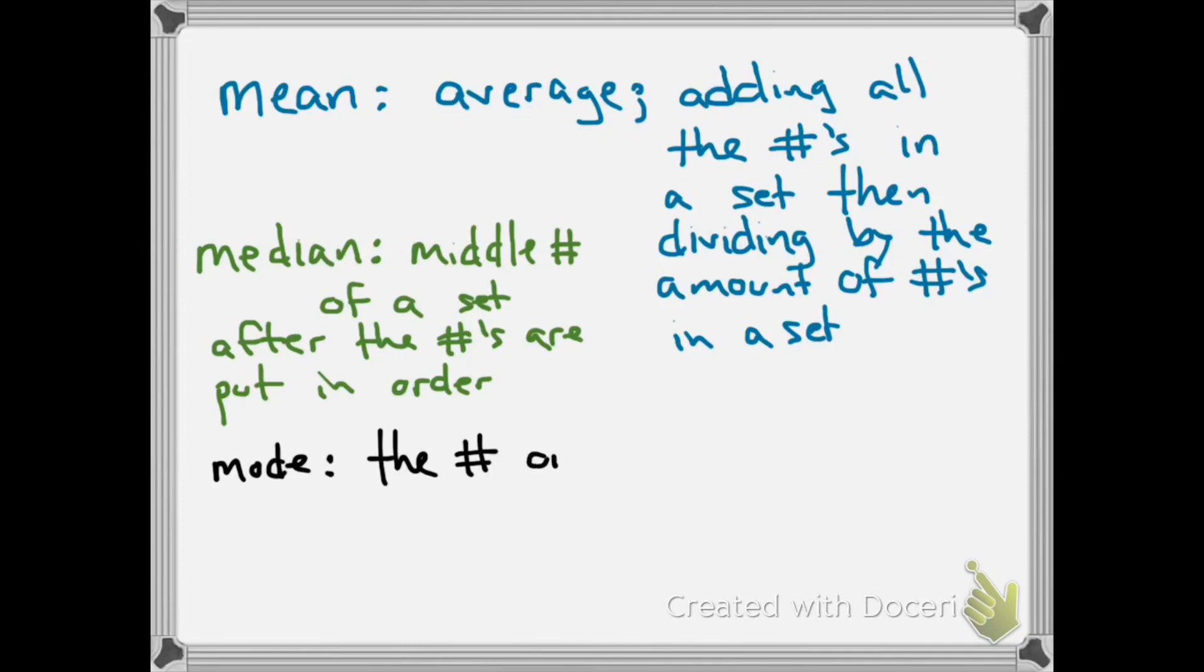You could actually have no mode in the set. So if every number only appears once, no mode. If you have a number where the twos happen twice, the threes happen twice, and then every other number happens once, then that means the twos and the threes are your mode.